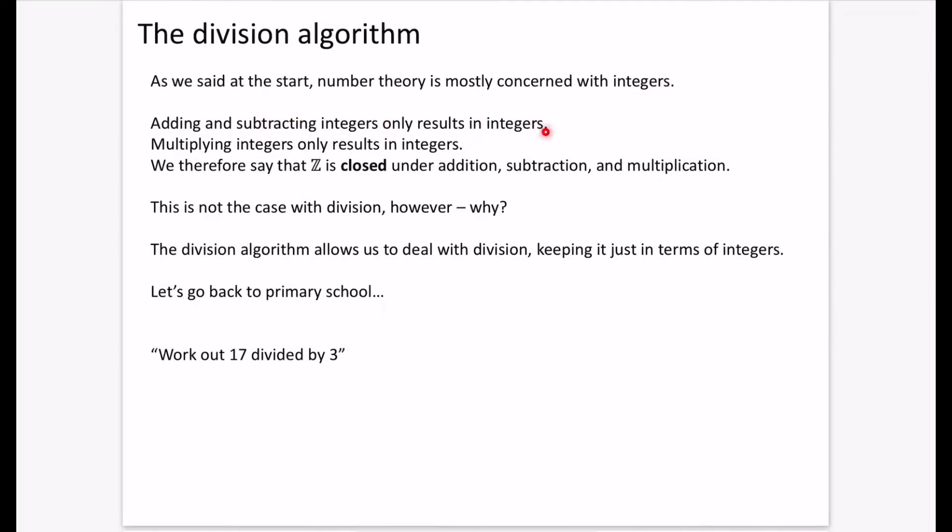As we said at the start, number theory is mostly concerned with integers. Adding and subtracting integers only results in integers. Multiplying integers only results in integers as well. So we could therefore say that Z, which represents the integers, is closed under addition, subtraction, and multiplication.